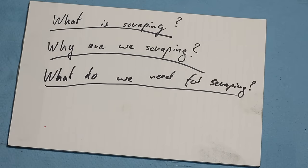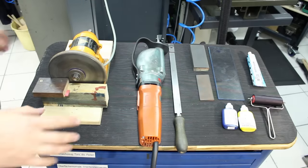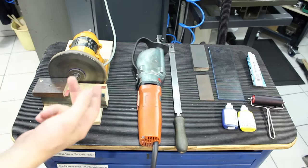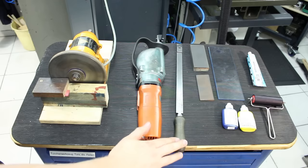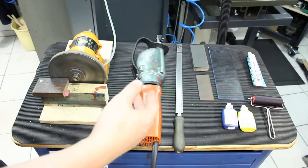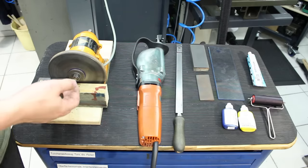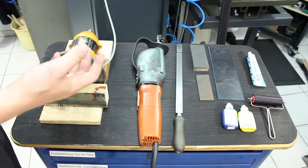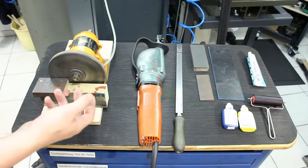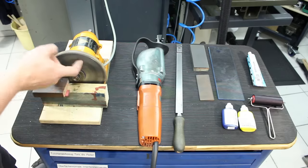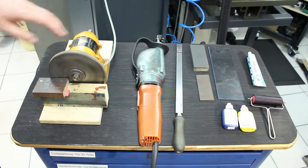What do we need for scraping? You can start out pretty basic. The most basic thing you need is a scraper — I'll go into detail on that later. You need a way to sharpen it, preferably a diamond wheel. There are other ways: a diamond file, diamond stones, or even a green silicon carbide wheel for your bench grinder, but those are pretty awful. Try to get a very fine grit diamond wheel and mount it on a bench grinder. This is my ghetto carbide grinder — I'll show that later.